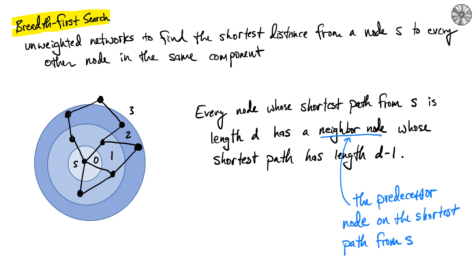The algorithm to find the shortest path or shortest paths in a network is a particularly important one. We're going to first look at what's called breadth-first search, which is finding the shortest path from a specific node to every other node in the network, in particular on an unweighted network.